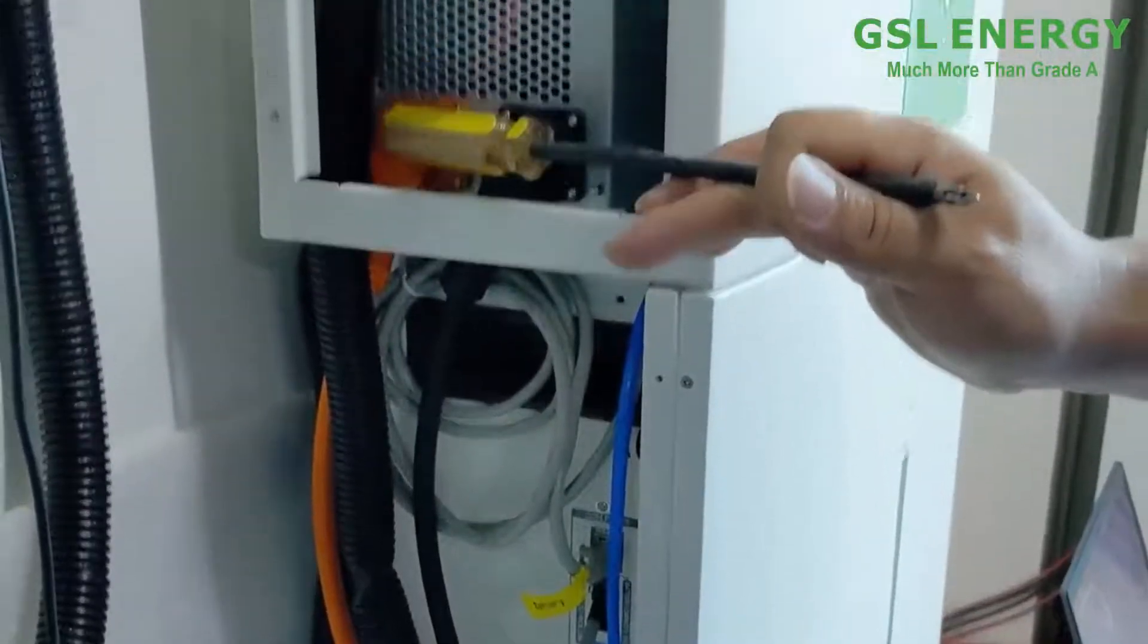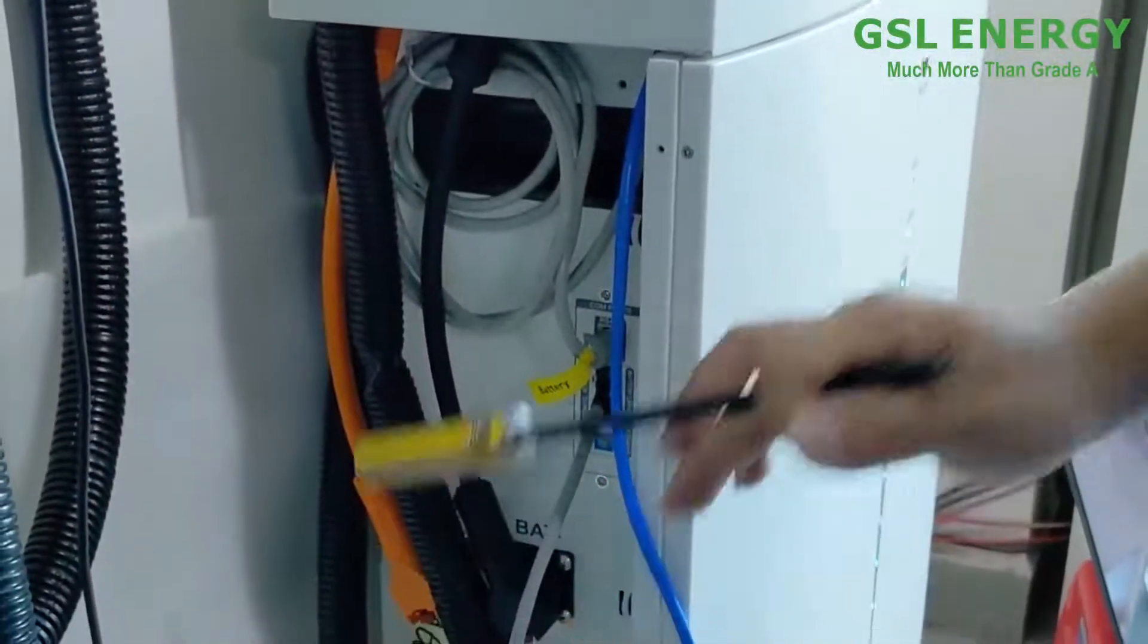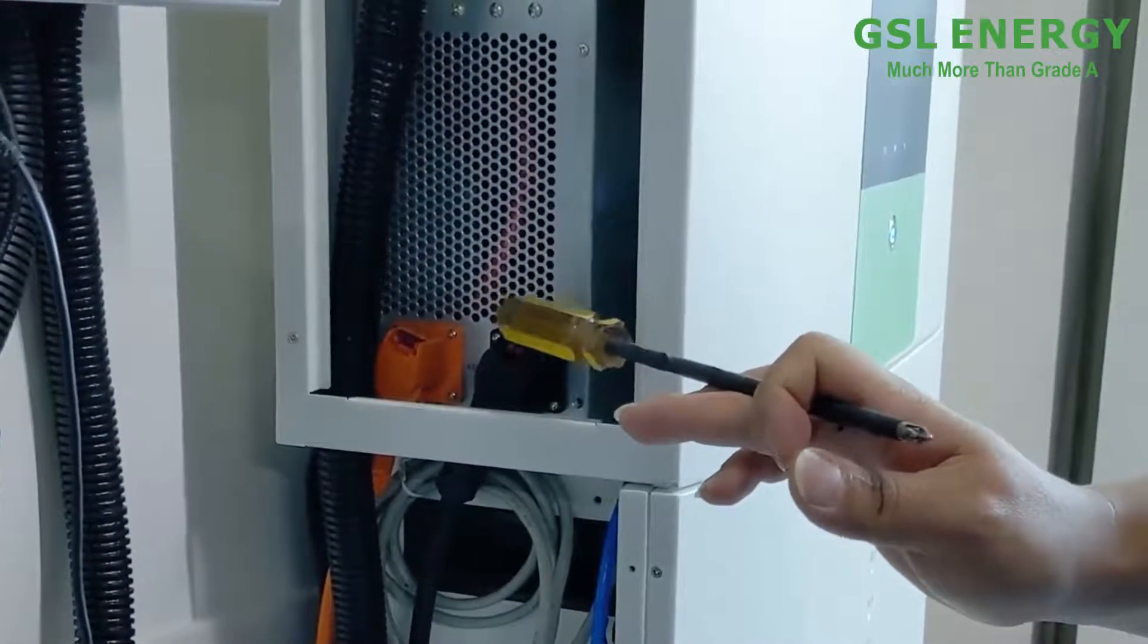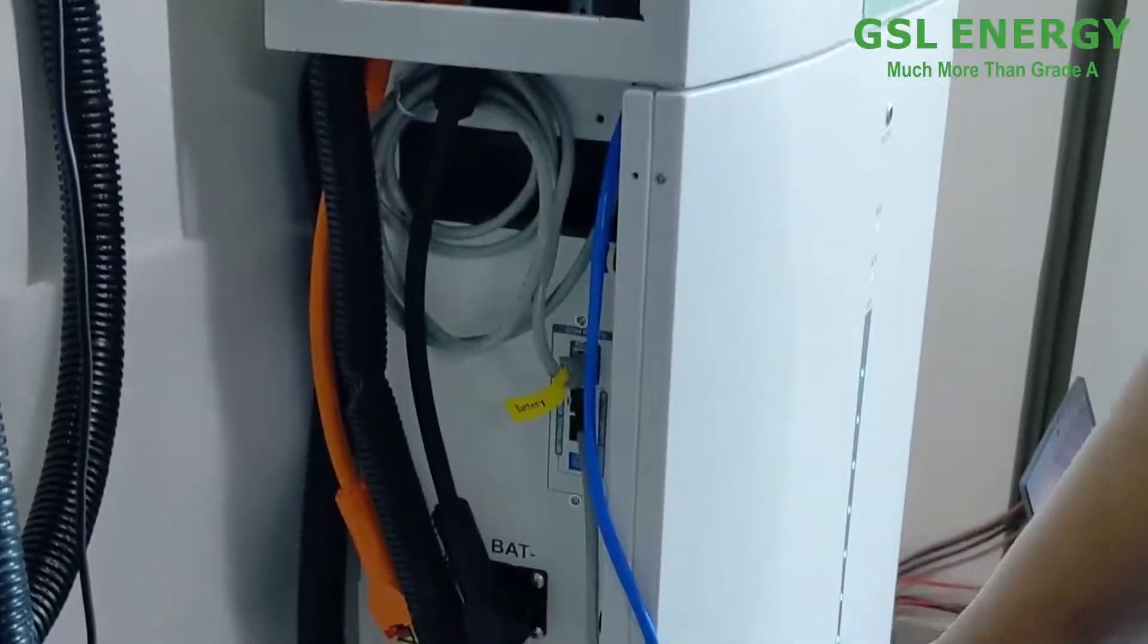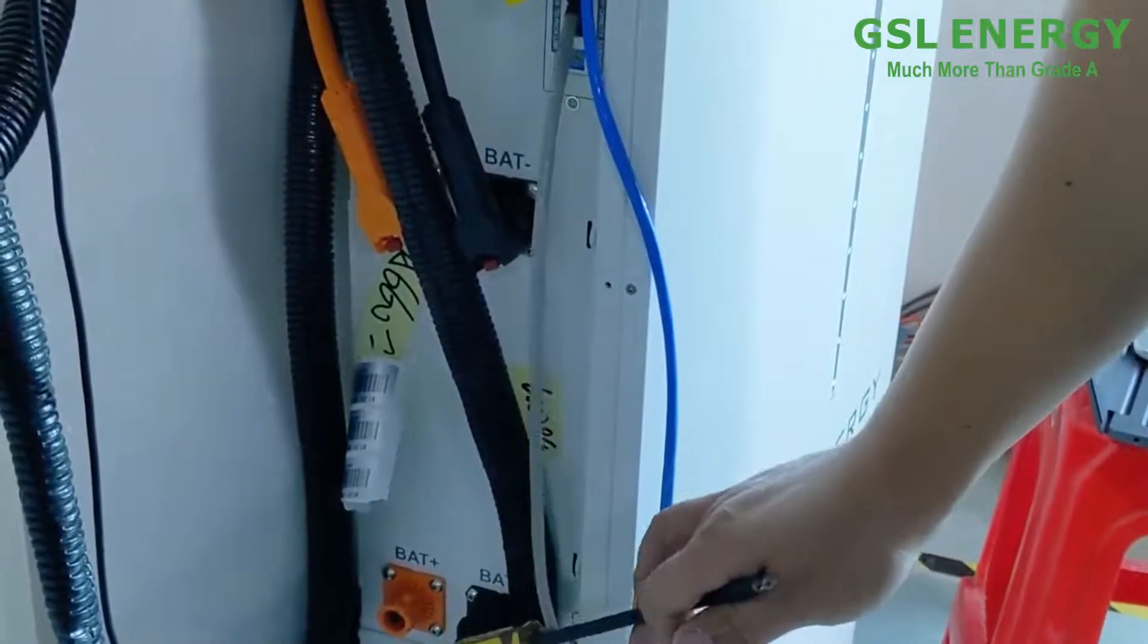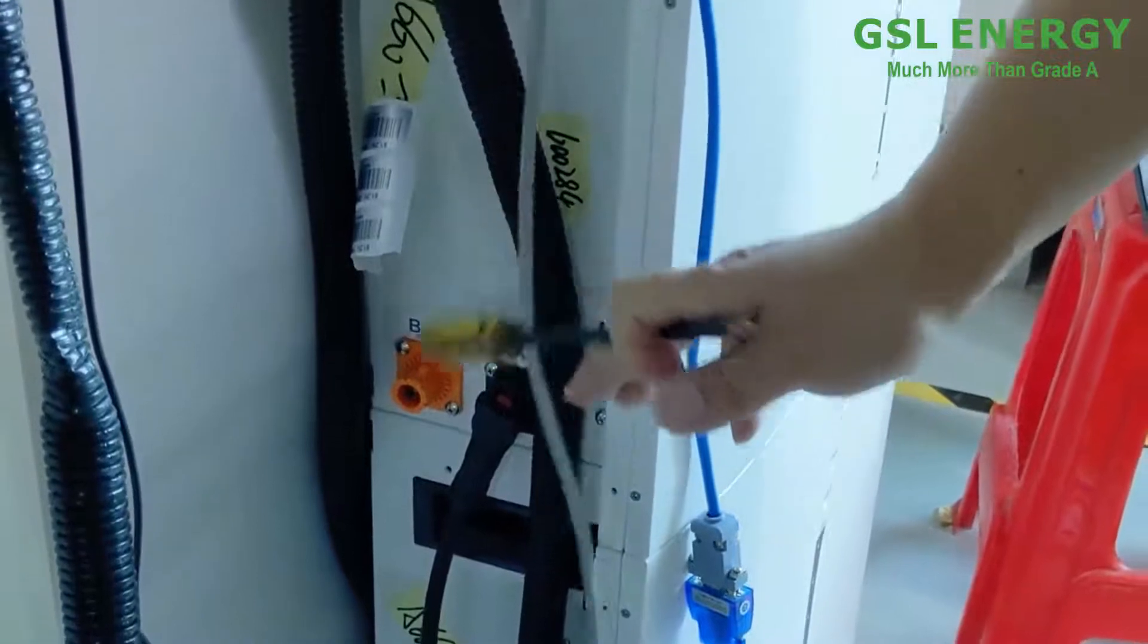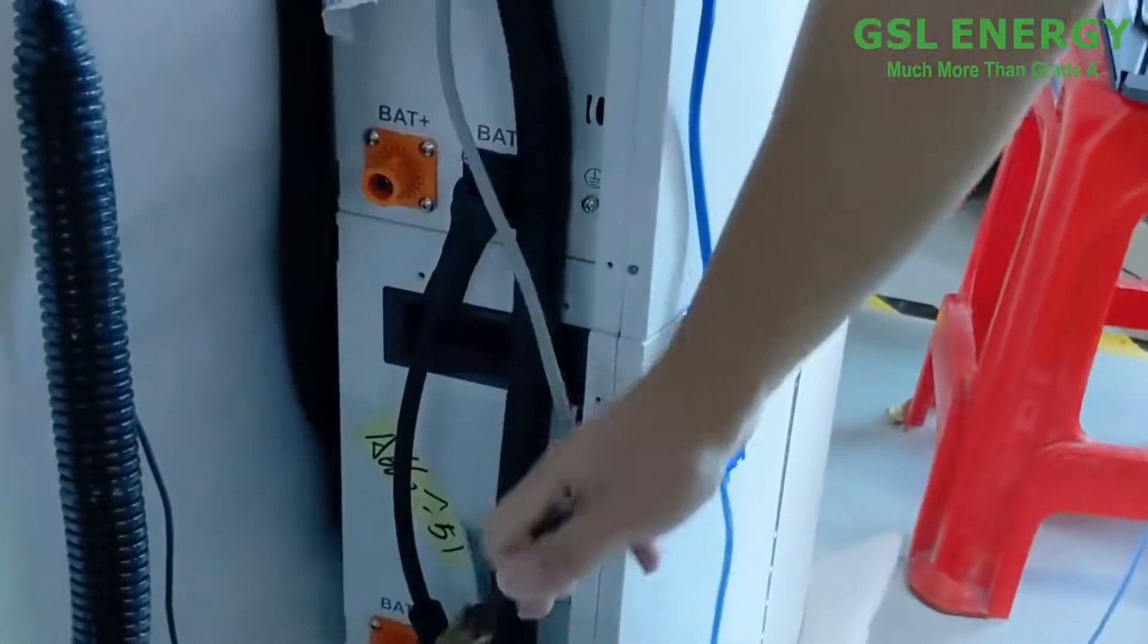Okay, the inverter, positive connector, the first one. And the negative connector from the inverter to the battery. And it's the second battery connected with the first battery. The positive, negative.